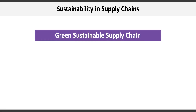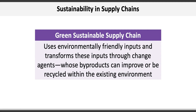Another key element of supply chain management is sustainability. In recent years there has been a strong push towards a green, sustainable supply chain, which uses environmentally friendly inputs and transforms them through change agents whose byproducts can improve or be recycled within the existing environment. For example, Apple heavily promotes its products as being PVC-free, made from recycled aluminum and other materials, and even manages the recycling of products returned by customers.